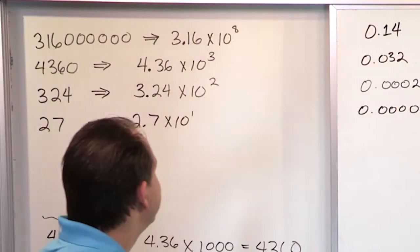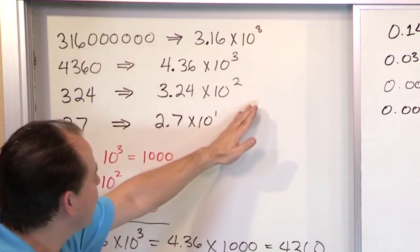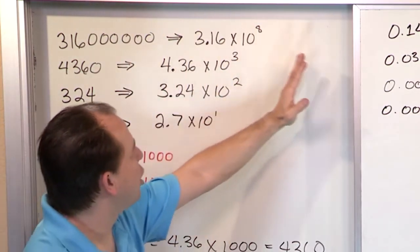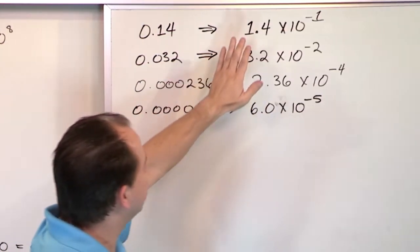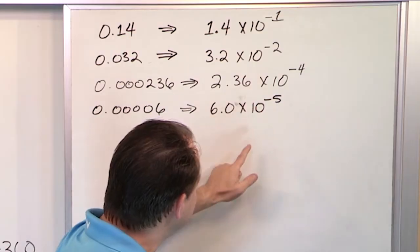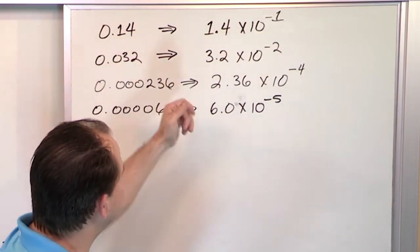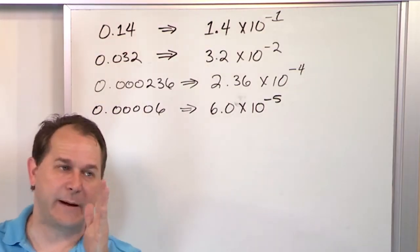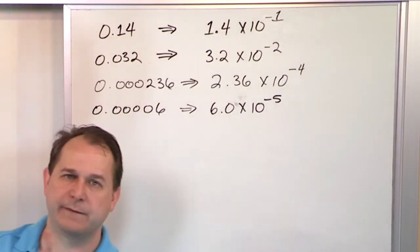So you see the pattern here. When you take a decimal like this and multiply it by a positive power of 10, you're making the number larger and you're moving the decimal that many spots to the right. When you take a power of 10 and multiply it by 10 to the minus something, you're making the number smaller because you're shifting the decimal this many places to the left. So positive powers of 10 shift the decimal to the right. Negative powers of 10 shift the decimal to the left.